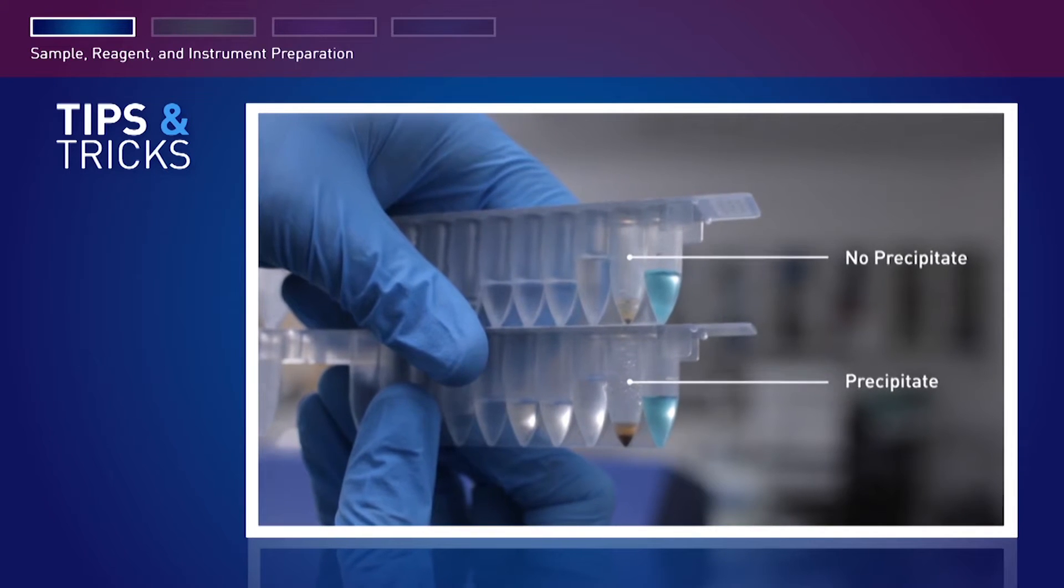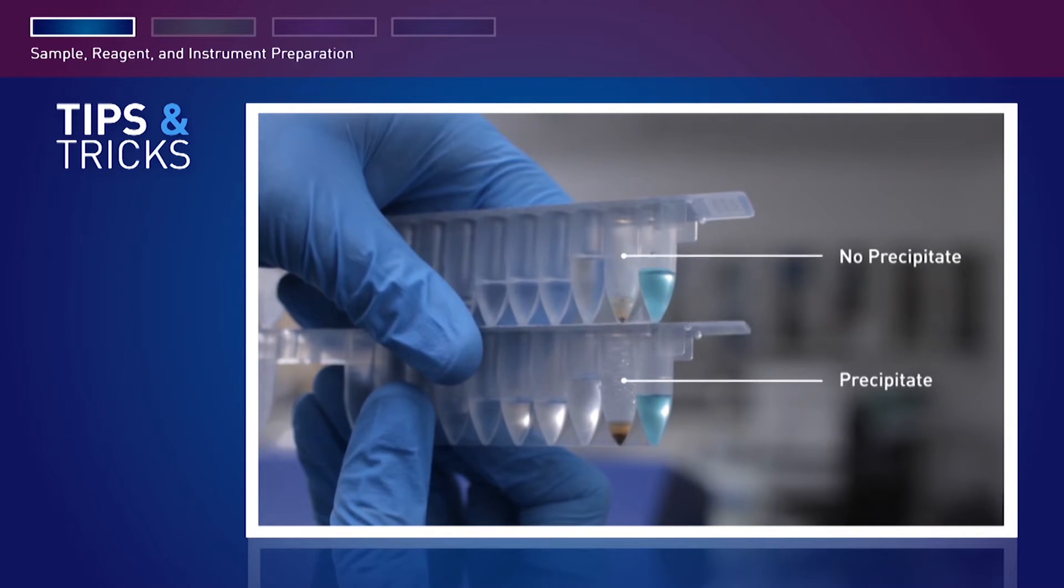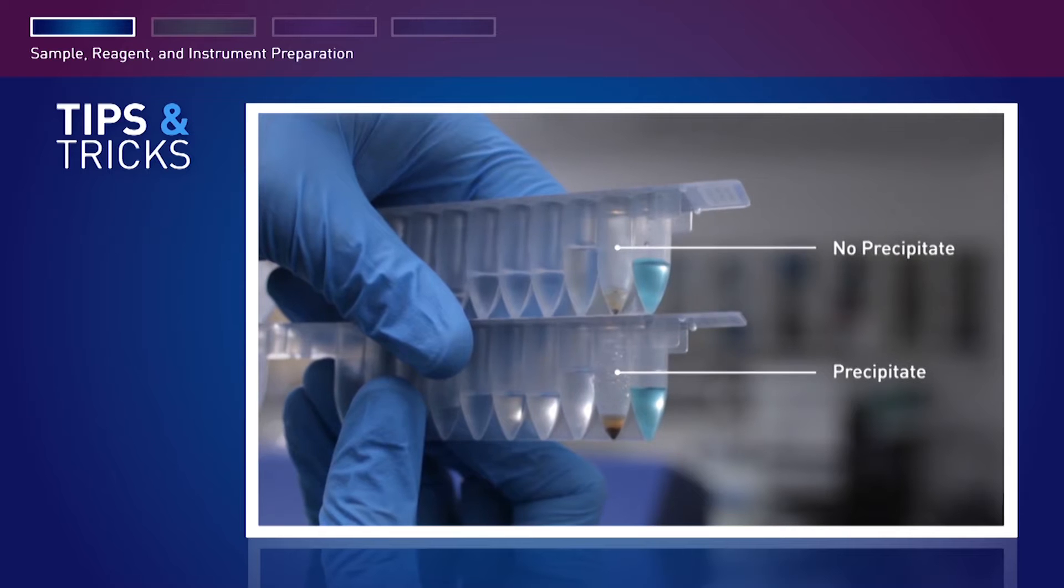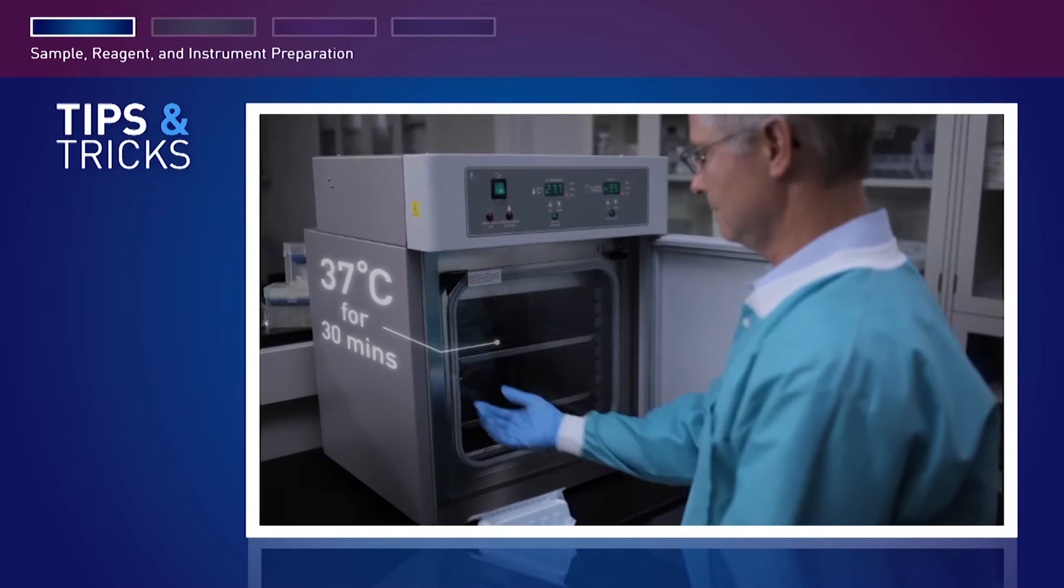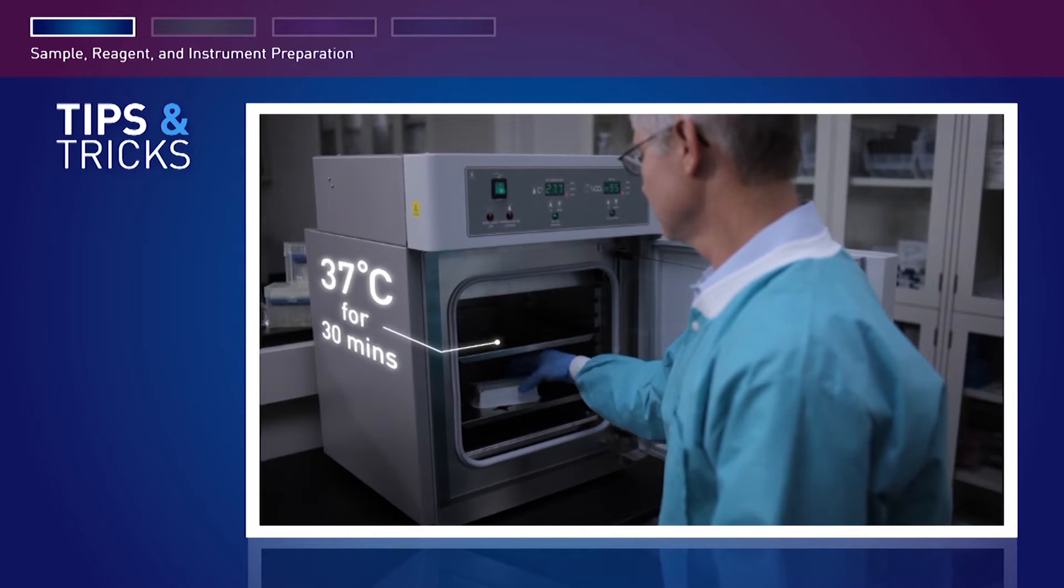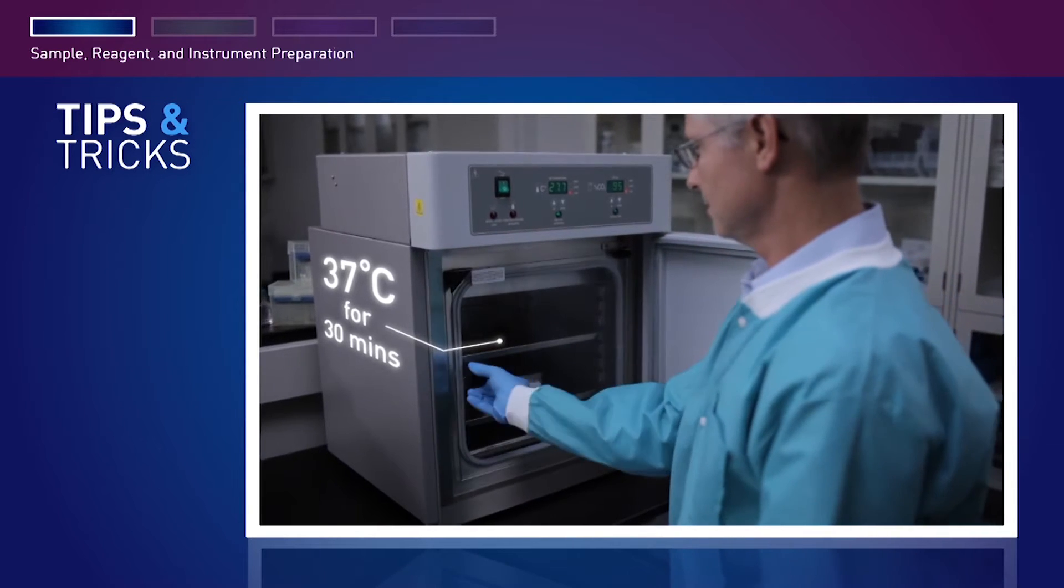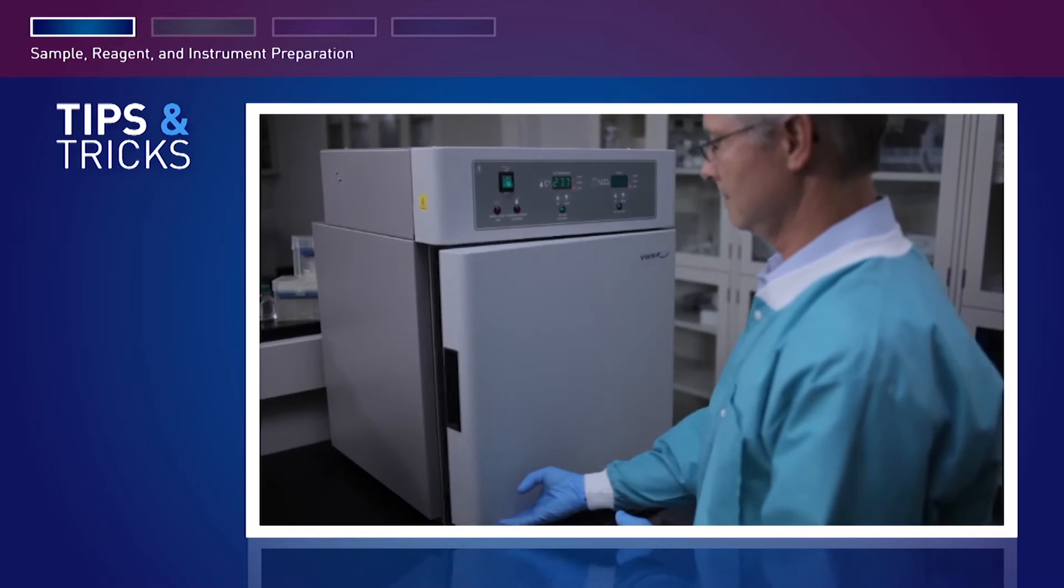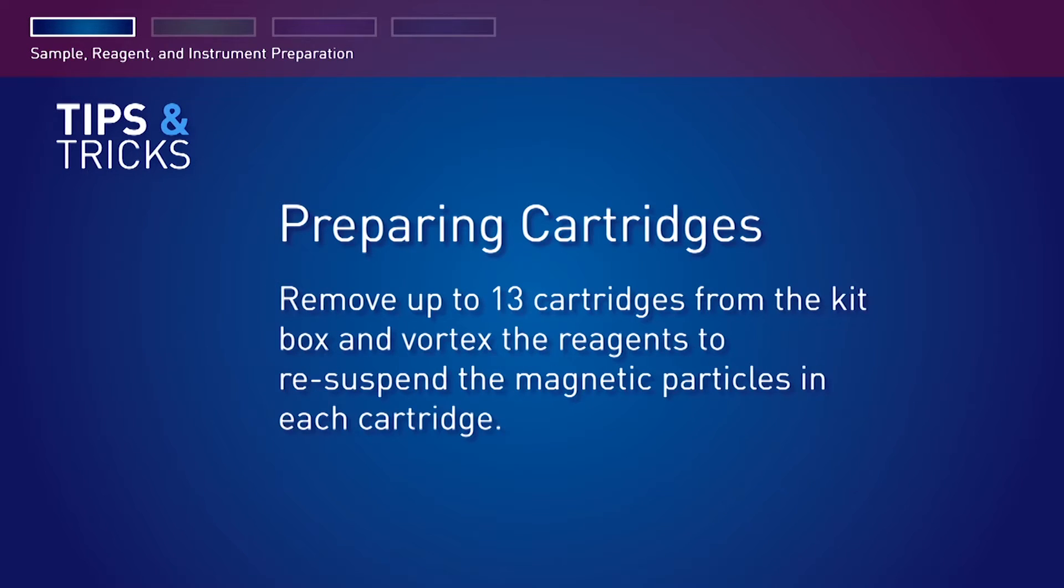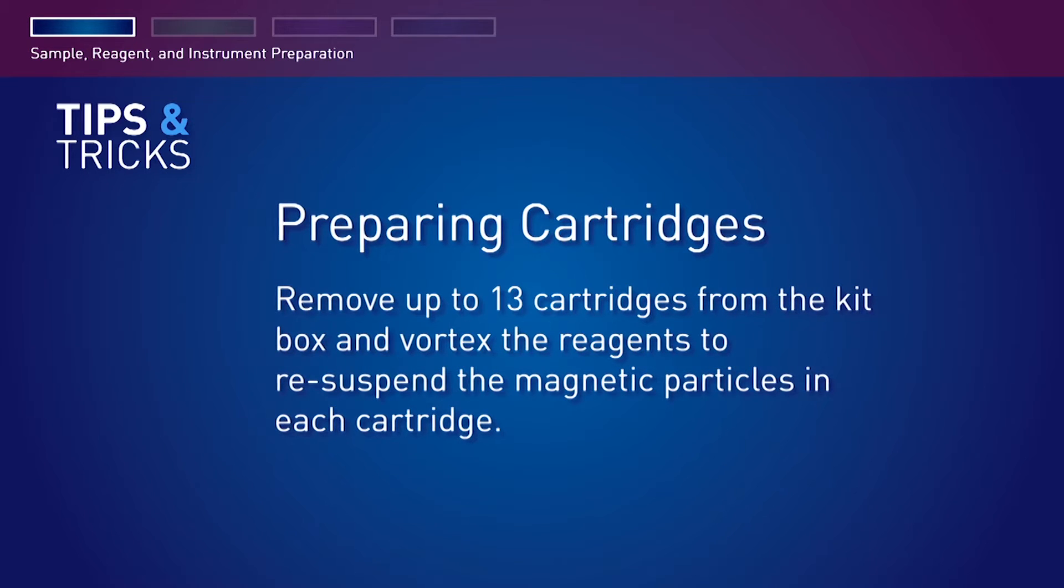If precipitate forms in compartments 1 or 2, lysis buffer and magnetic particle suspension, heat the cartridge in an incubator at 37 degrees for 30 minutes or until the precipitate is no longer visible. Heat only those cartridges that you plan to use that day.